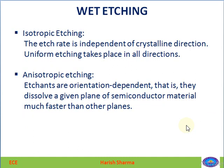There are two types of wet etching: isotropic etching and anisotropic etching. In isotropic etching, the etch rate is independent of crystal orientation — it is uniform for all directions and all planes of the crystal. In anisotropic etching, it is crystal-orientation dependent; a given plane of the semiconductor material dissolves faster than the other planes.